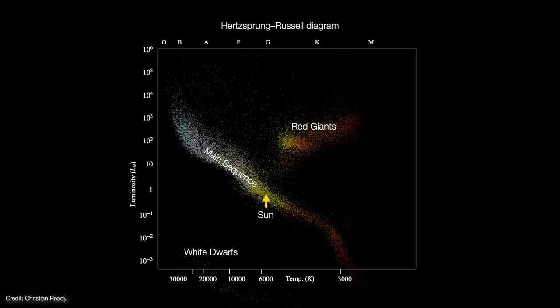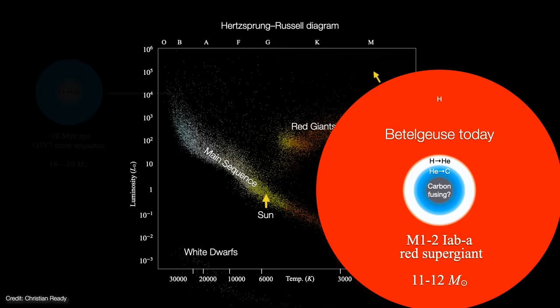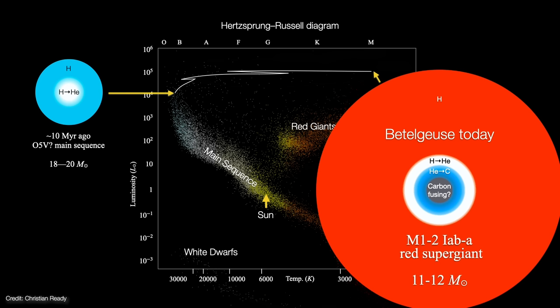We can visualize these models on the Hertzsprung-Russell diagram, which plots stars increasing luminosity versus decreasing surface temperature. Betelgeuse is here as a very cool yet luminous M-type red supergiant. About 10 million years ago, it was a smaller, hotter, O-type main sequence star with an initial mass of around 20 solar masses.